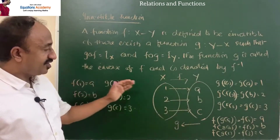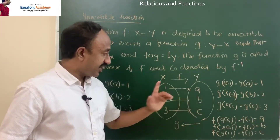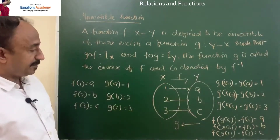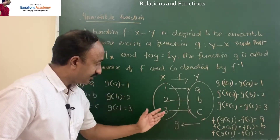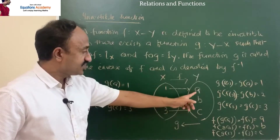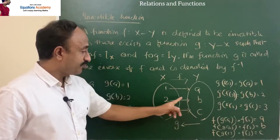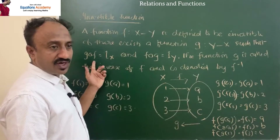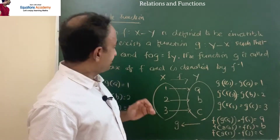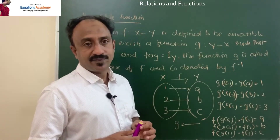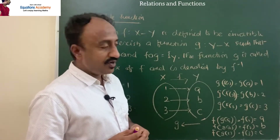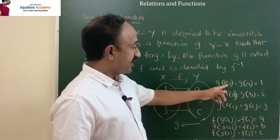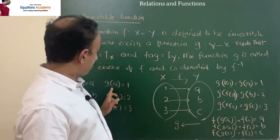f(1) is a, f(2) is b, f(3) is c. The function g from Y to X gives: g(a)=1, g(b)=2, g(c)=3. So g(f(1)) = g(a) = 1.